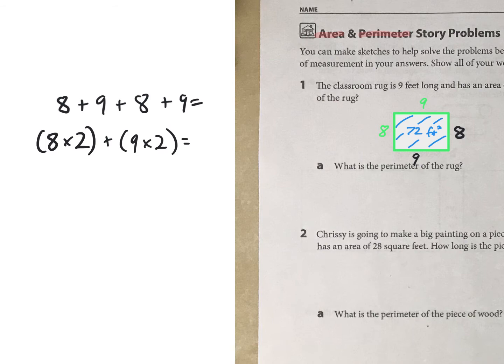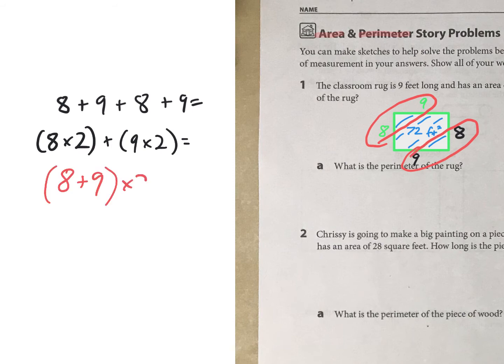Or, another way: if I add those two numbers together — 8 plus 9 — that's going to happen twice, so I could just do 8 plus 9 and then multiply by 2. I'm not going to give you the answer because you have three different ways you can solve it, but that is going to be the perimeter of that rug.